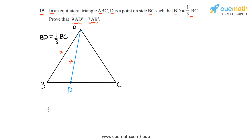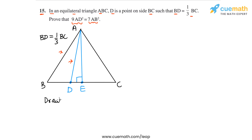We will apply the Pythagoras theorem to solve this problem. To apply the Pythagoras theorem we need right-angled triangles in the figure. So here's what we are going to do: from vertex A we will drop a perpendicular onto BC, and we'll call the foot of the perpendicular point E. So we have drawn AE perpendicular to BC.